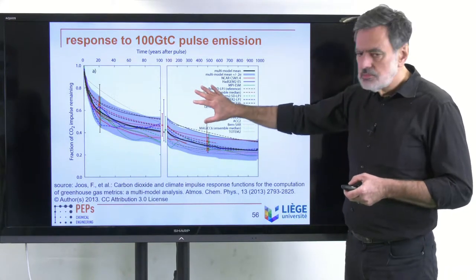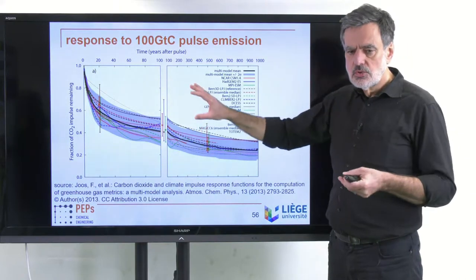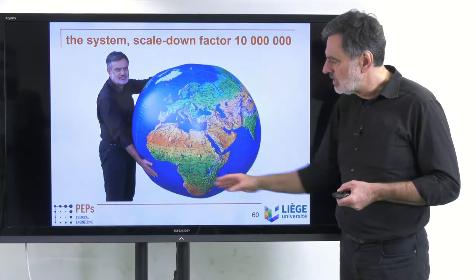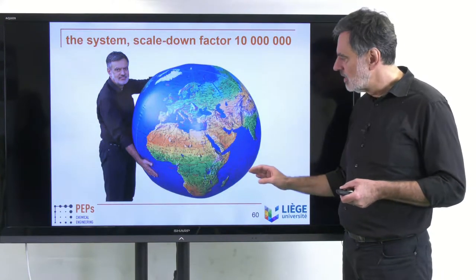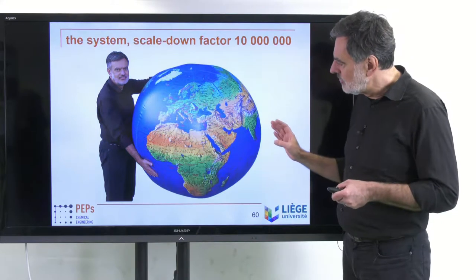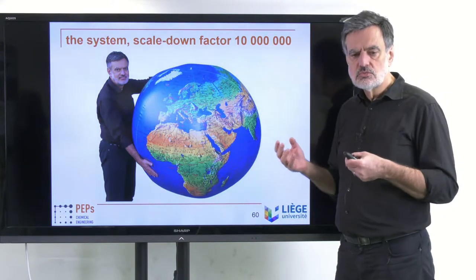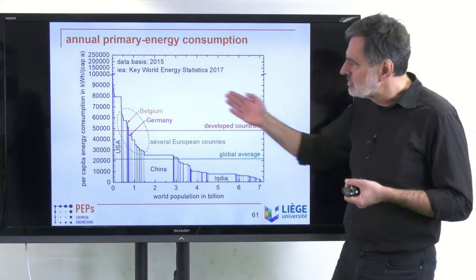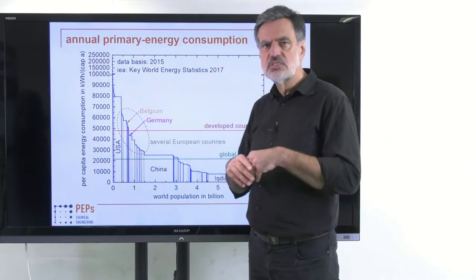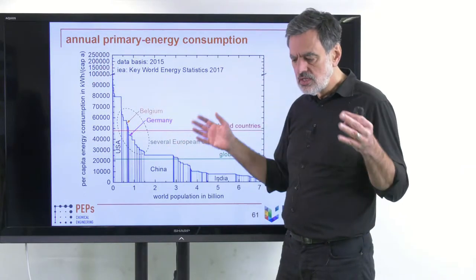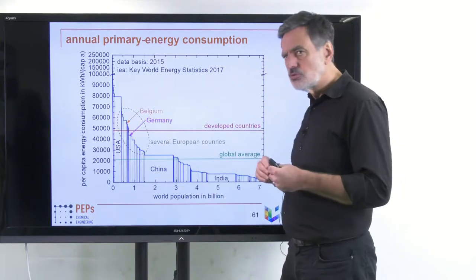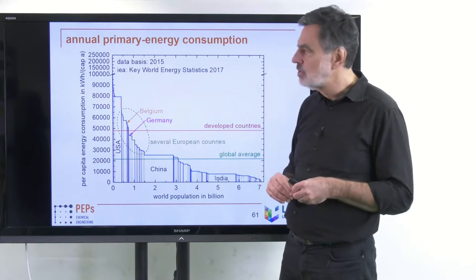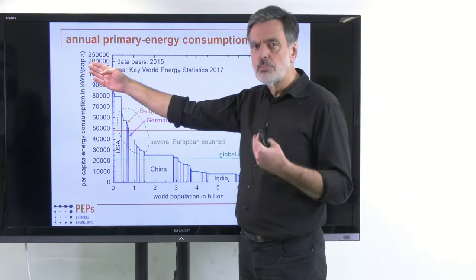In order to investigate our influence on that and what we can do about it, I should mention that I'm always looking at global balances — the overall Earth is my system. To get a first idea of how we use resources, I want to show the energy consumption in kilowatt-hours per capita per year, where per capita simply means the overall value divided by the number of people.